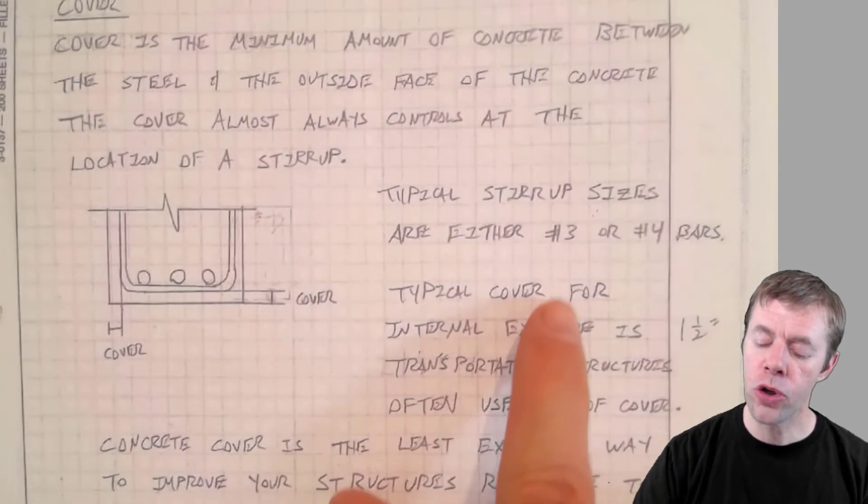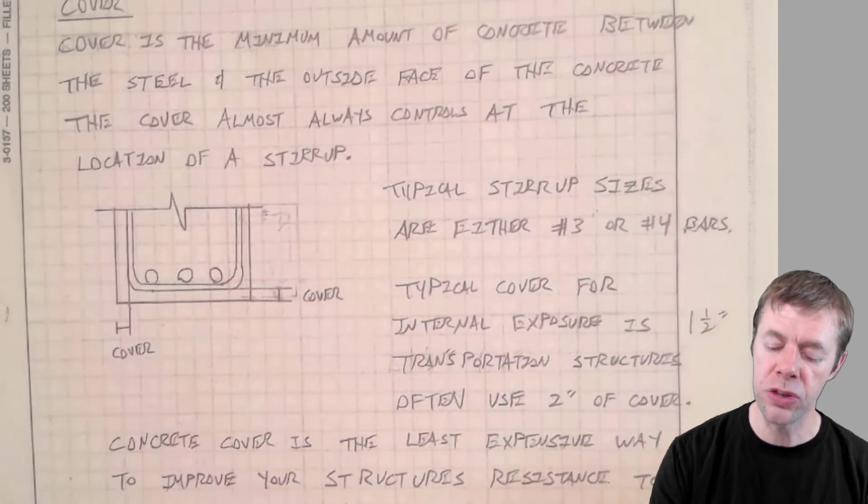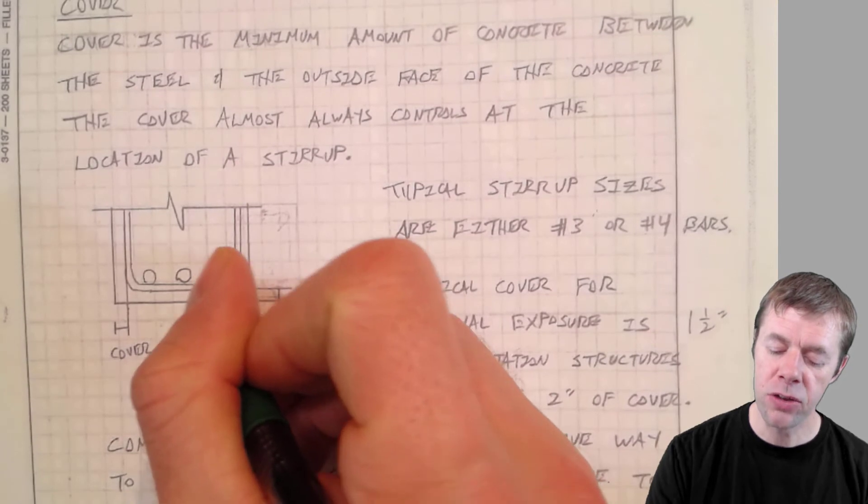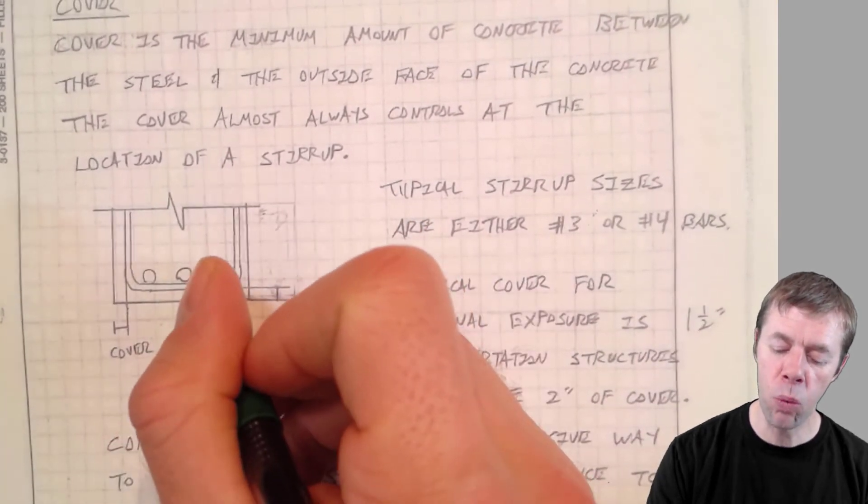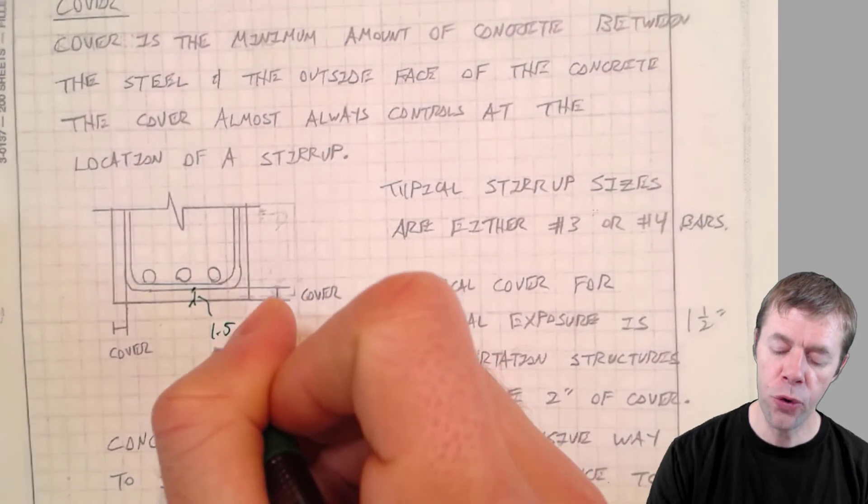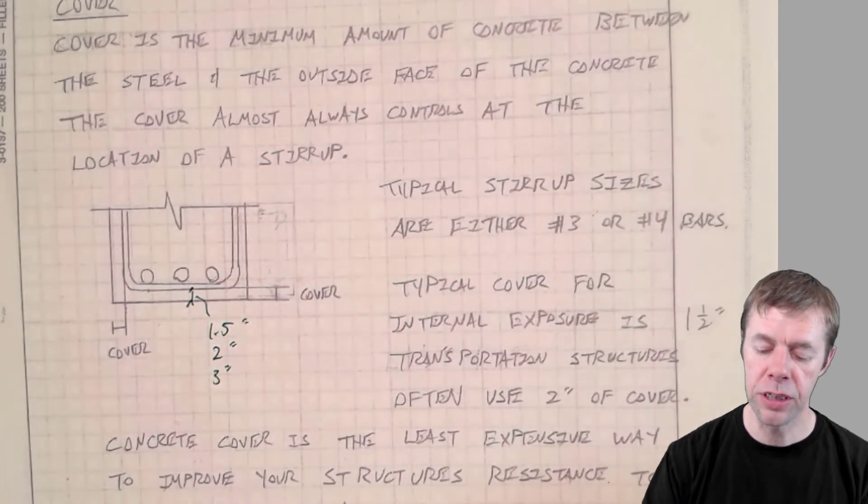Typically, our stirrups that we use, that's where our cover actually controls, is this distance from the outside surface to the surface of our stirrup. That's what has to be one and a half or two or three inches, depending on what the application is.